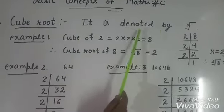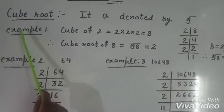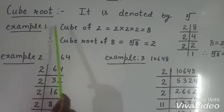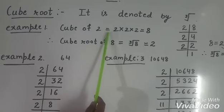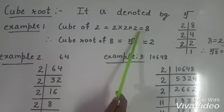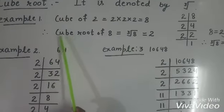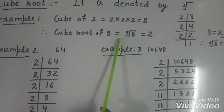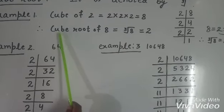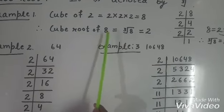Cube root is denoted by this symbol. Now we will clear the cube root with the help of example. Cube of 2 is 2 × 2 × 2 = 8. Therefore cube root of 8 is 2. Now we will clear how to calculate cube root of 8.